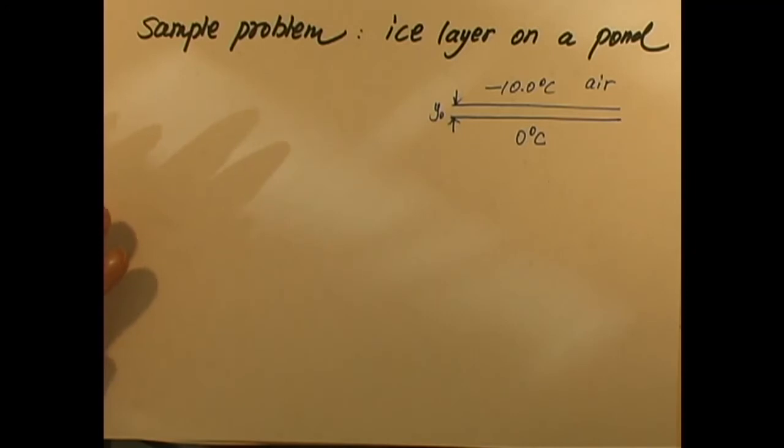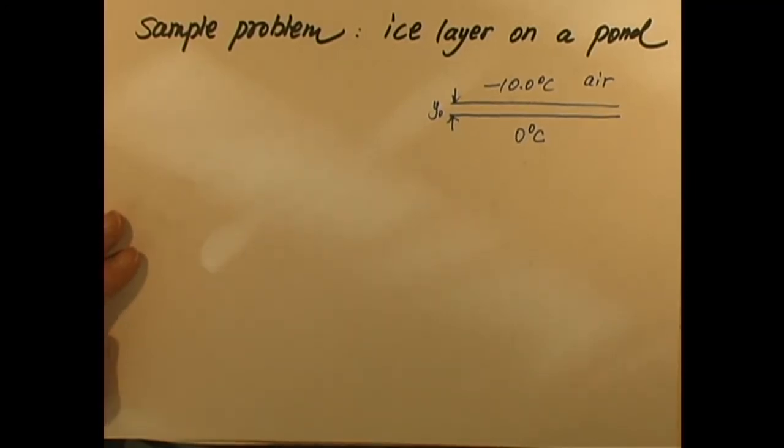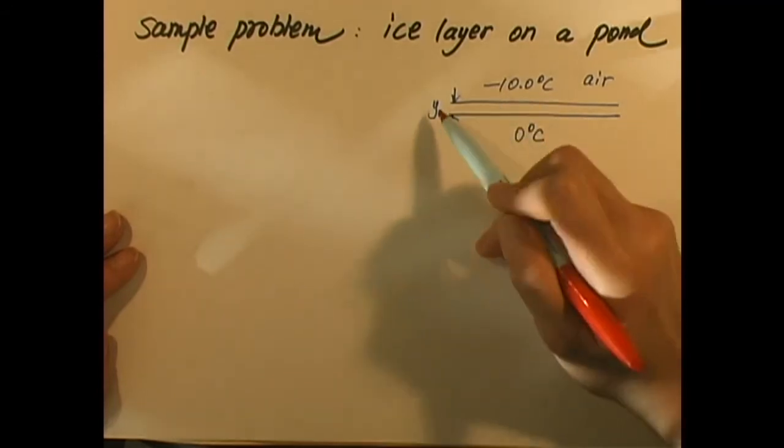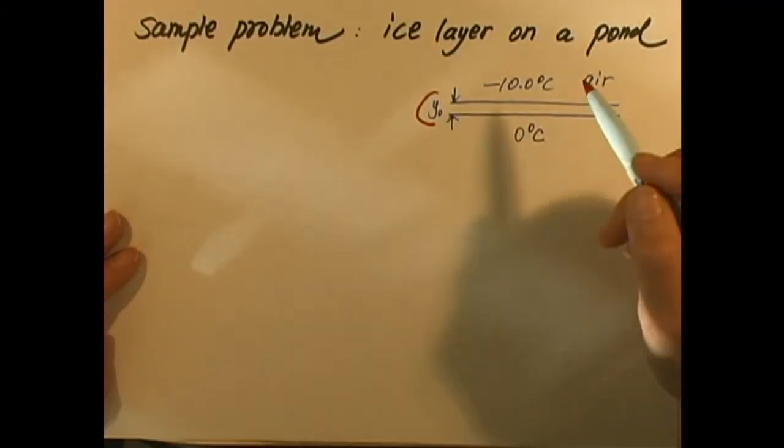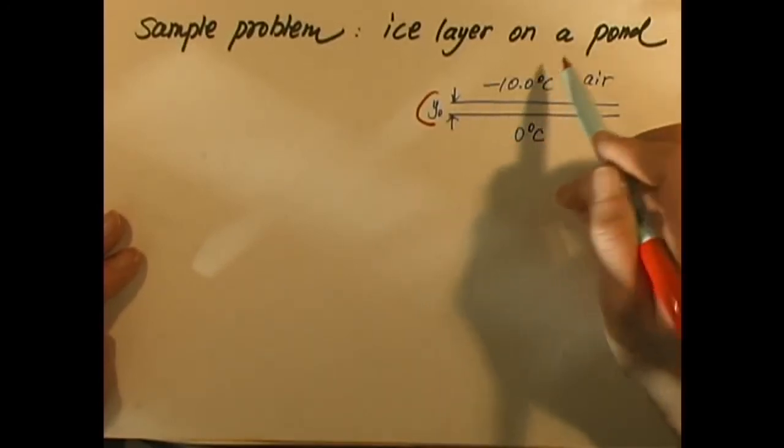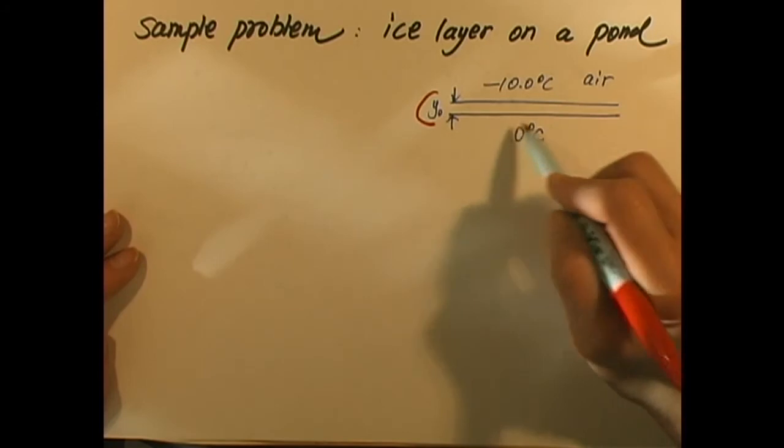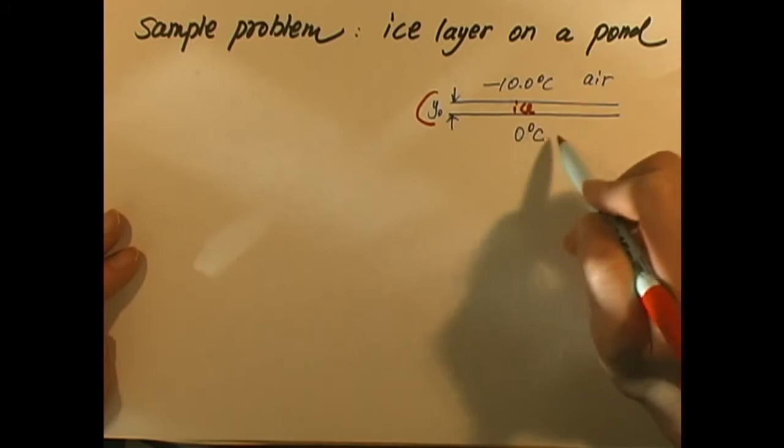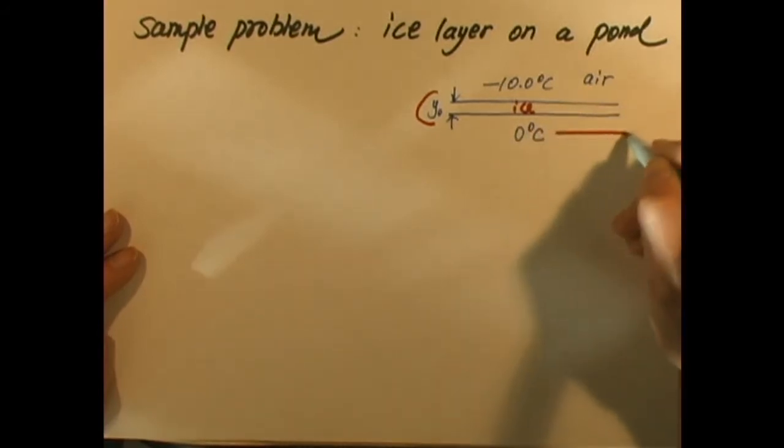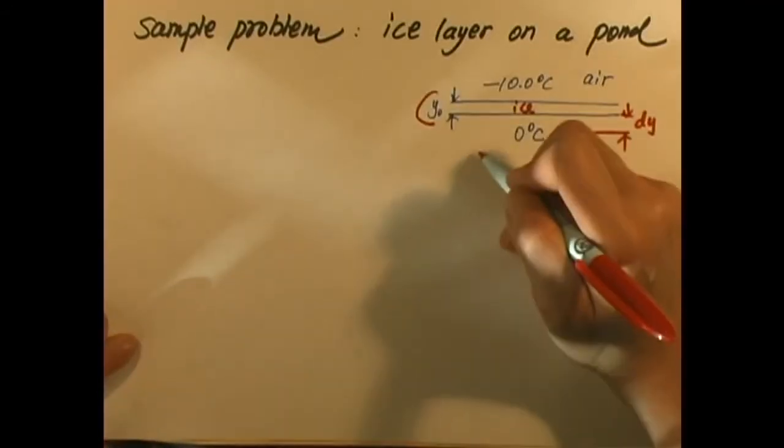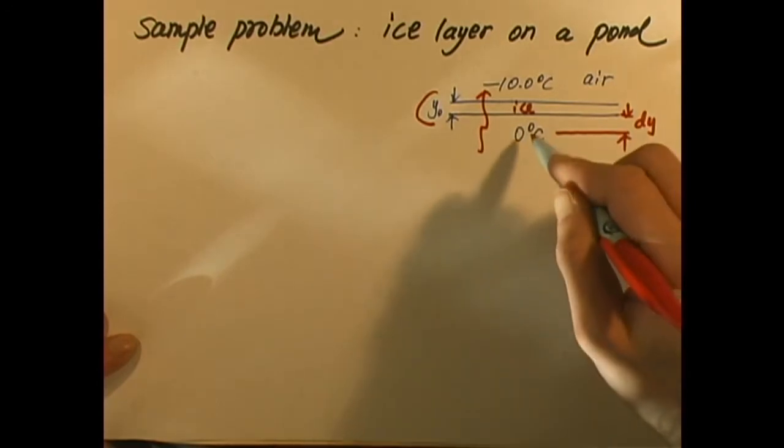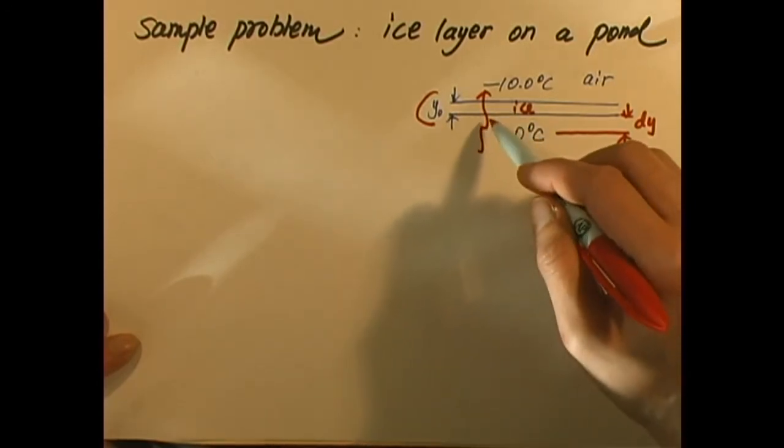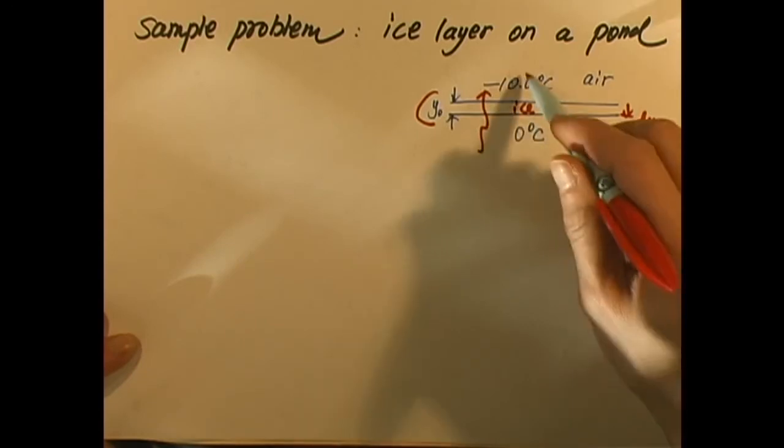Let's look at one more problem. Ice layer forms on the surface of a pond. Let's say initially this is the thickness of the ice, it's already formed. The air has a temperature of negative 10 degrees Celsius, very cold. Underneath the ice, the temperature of water is 0, so the water is ready to freeze. Let's assume this layer dy is going to freeze. The heat is sneaking out this way because 0 degree water freezes, releases heat.